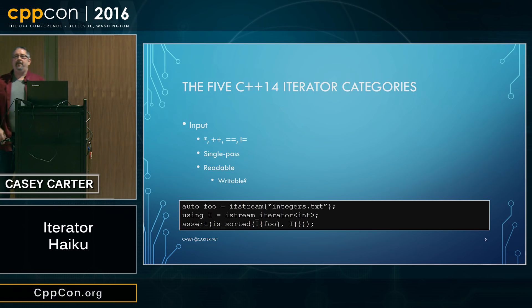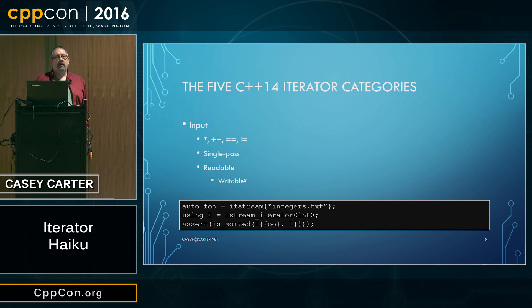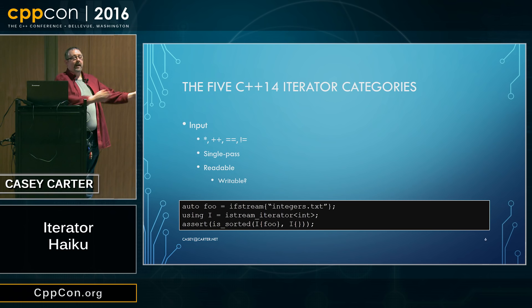Equals can test two iterator values to see if they denote the same element in the sequence, or test an iterator with the end iterator of a sequence to see if we've gotten to the end. We use the same syntax for both operations. Not-equals is the complement of equality. These kinds of iterators are single-pass — I can only go through a sequence once with input iterators. I can't go back to a value I saw before, and they are obviously readable.